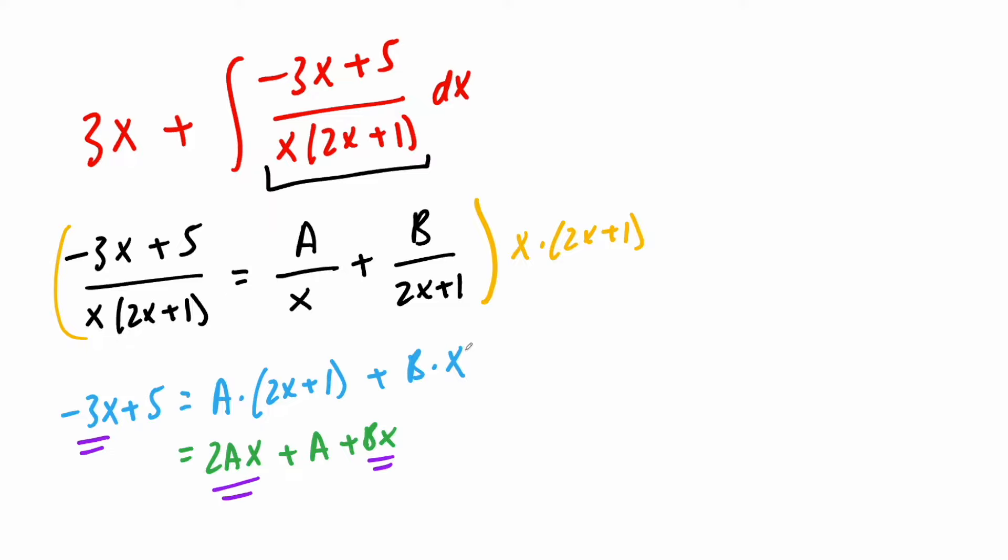So one focusing on x, and so we can say that negative 3 is equal to 2a plus b. Likewise, we can do one focusing on the constant, so 5 and a. So 5 is equal to a. So we know a, a is 5.